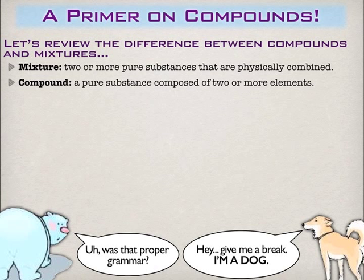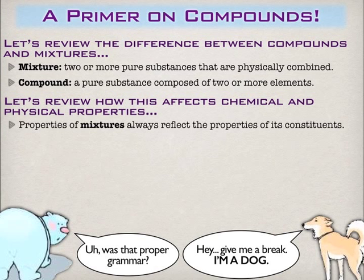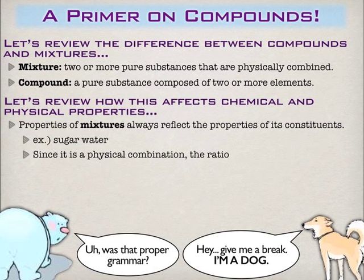You're going to have more than one pure substance, so a mixture can be physically separated. Compounds, on the other hand, are a single pure substance composed of two or more elements, chemically combined into a single pure substance. Mixtures reflect the properties of their constituents — for example, sugar water is going to be both wet and sugary. It's going to retain the properties of the original substances.